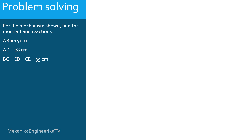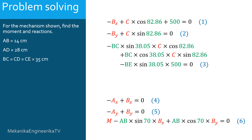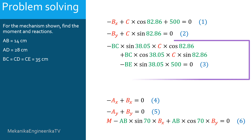Using equilibrium equations, we have established 6 equations: 3 equations for bar BCE and 3 equations for bar AB. These 6 equations involve 6 unknowns: the moment M and 5 reactions AX, AY, BX, BY, and C. The key equation is equation 3, which when solved will give C; then we can solve for the other unknowns.